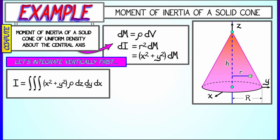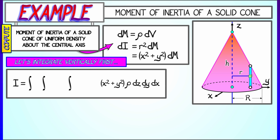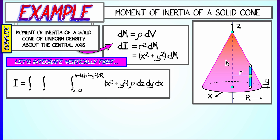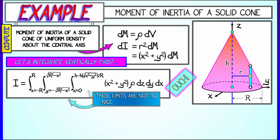So let's integrate rho times the quantity x squared plus y squared, dz dy dx. Let's do the z component of the integral first. The limits of integration are a little involved. The bottom limit is easy — that's z equals zero. The top limit is h minus h times the square root of x squared plus y squared divided by R. Then we have to integrate over the circular disk of radius capital R in the plane, meaning y goes from minus the square root of R squared minus x squared to plus the square root of R squared minus x squared, and x goes from minus R to R.